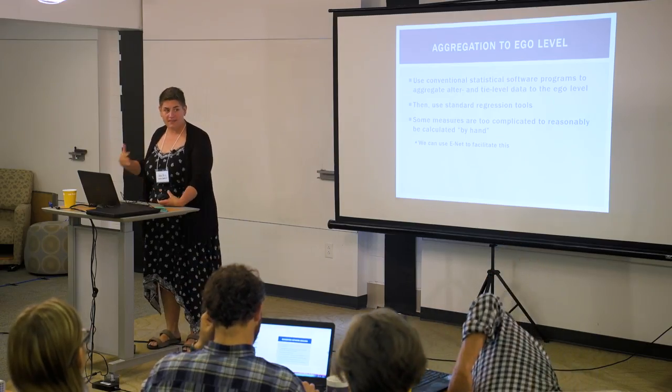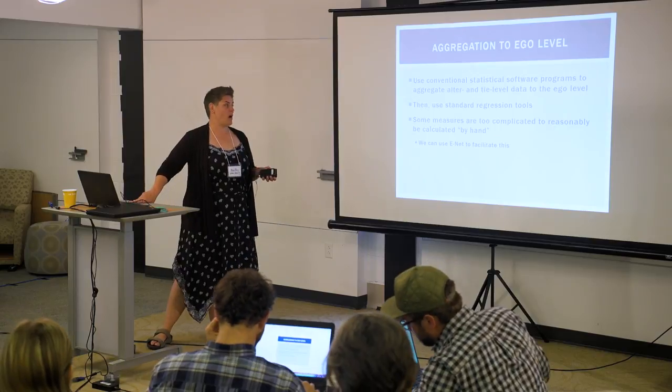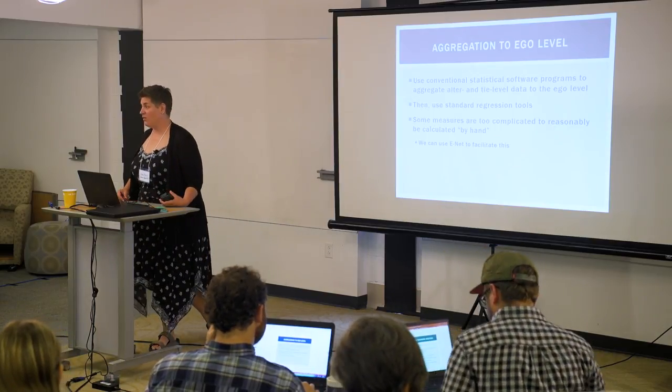First I'm going to talk about aggregation to the ego level, which is by far the most common way these data are analyzed, and then to standard regression tools. Some measures are too complicated to be reasonably calculated by hand, but a lot are easy. In R you can use the ave command, in Stata you can use the egen command to calculate things like the mean of the network, maximum, minimum, standard deviation. Others are more complicated and either way you have to write a lot of code, so we can use ENet to facilitate creating these variables.